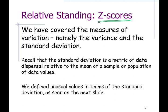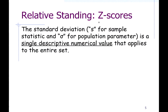Just like you can convert between other units — two gallons equals eight quarts, or one mile is 5,280 feet — you can convert between any of those units and z-scores. The z-score is the number of standard deviations from the mean, the number of standard deviations above the mean.